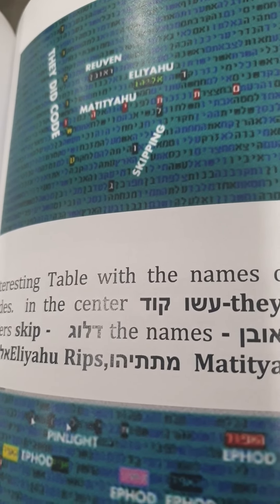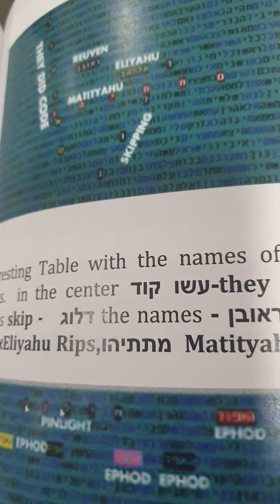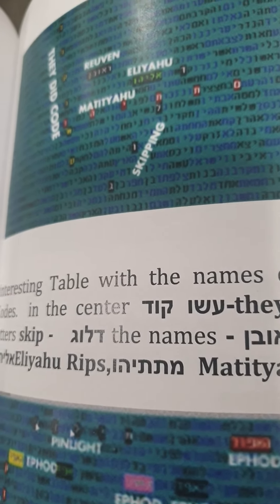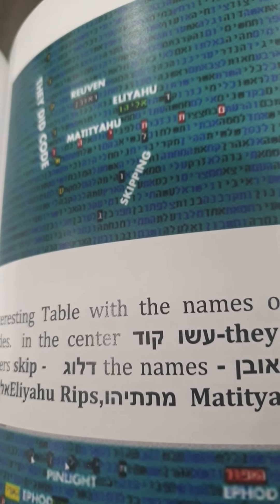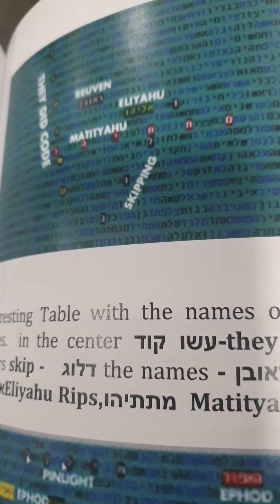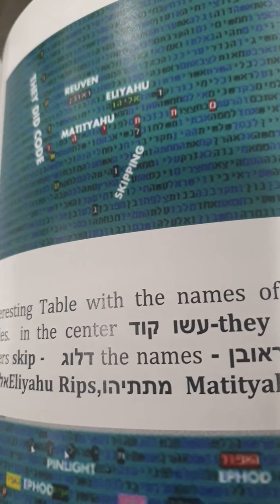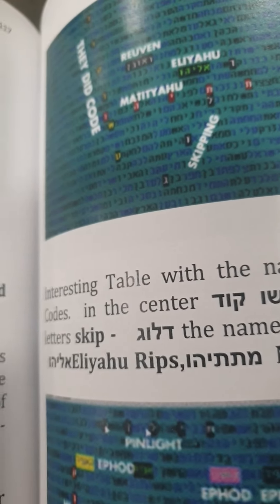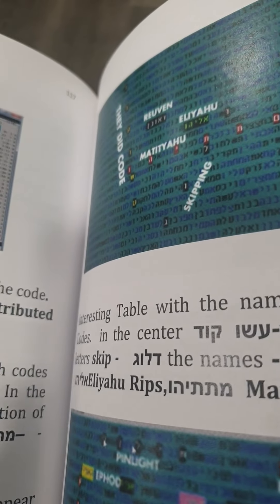We show you now two very interesting Bible Code tables from the book Bible Code N. You can get it at Barnes and Noble, Amazon.com, and books.com. So what is interesting in this table? The first thing you see in this table is what Kim Sulman wrote — an interesting table with the names of those who do the codes.